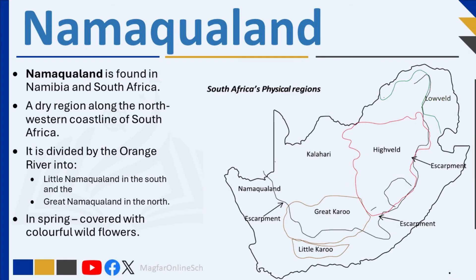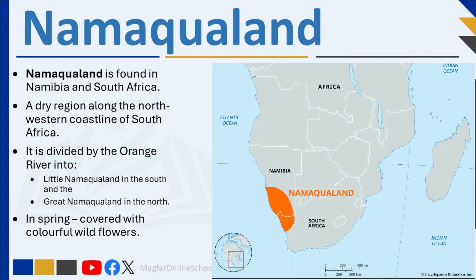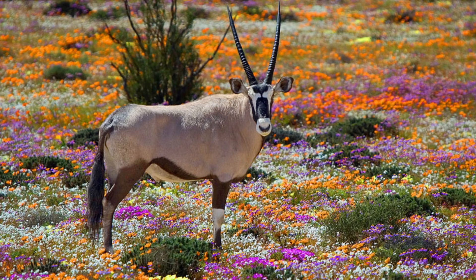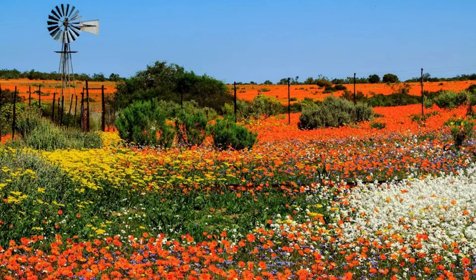Namakwaland is found in Namibia and South Africa. It is a dry region along the north-western coastline of South Africa, divided by the Orange River into Little Namakwaland in the south and Great Namakwaland in the north. Namakwaland is famous during spring, around September, when the area is covered with colorful wild flowers.